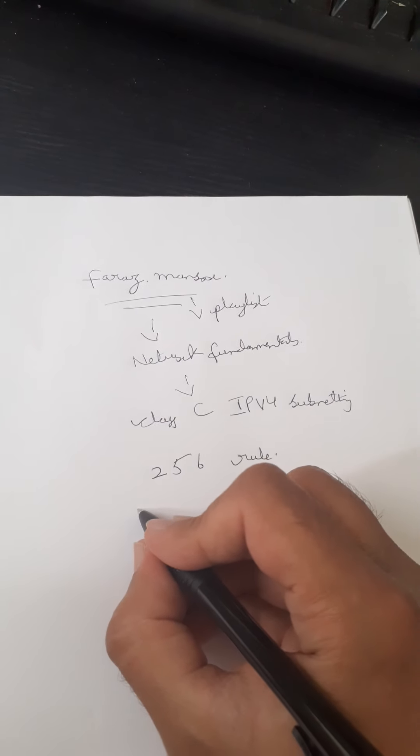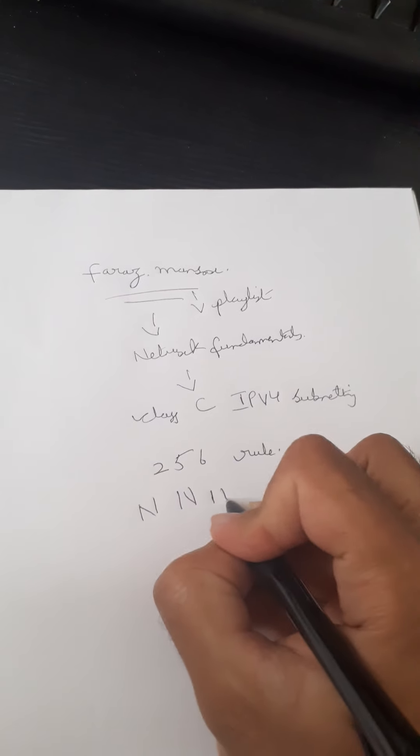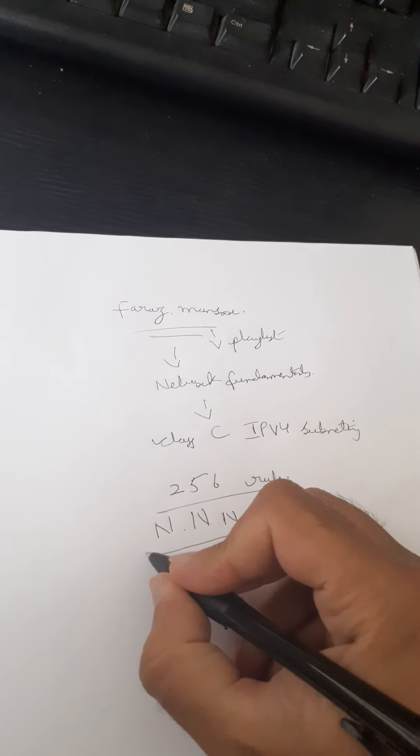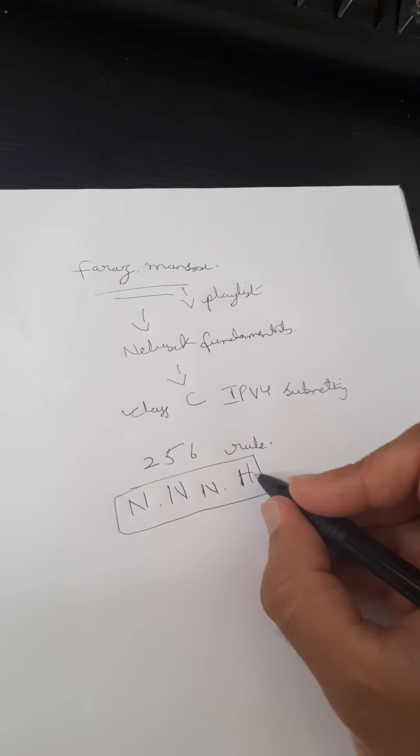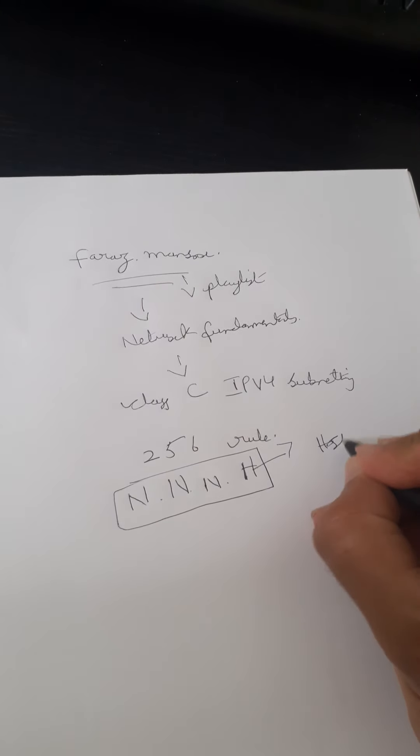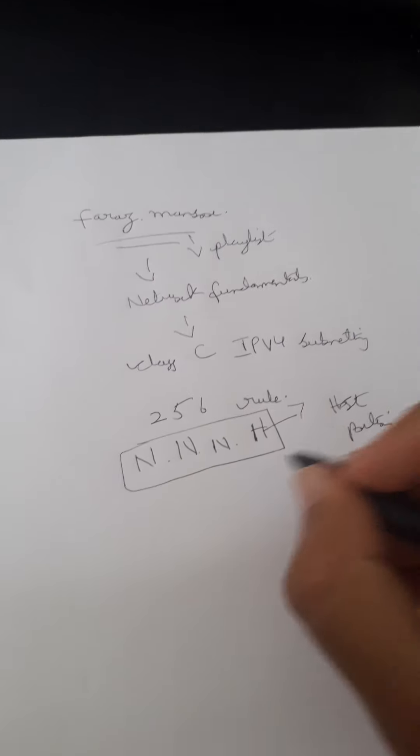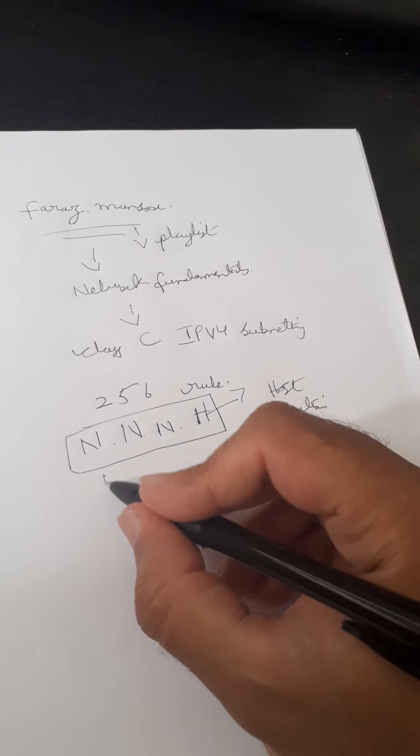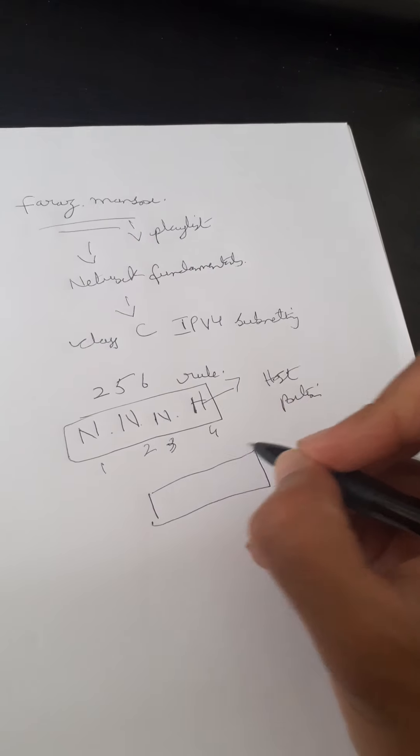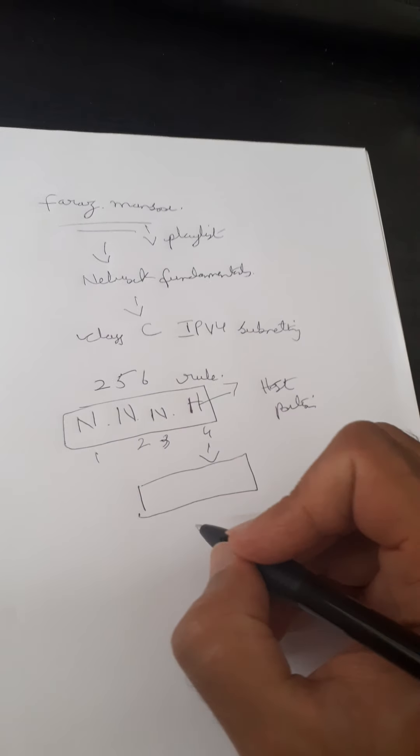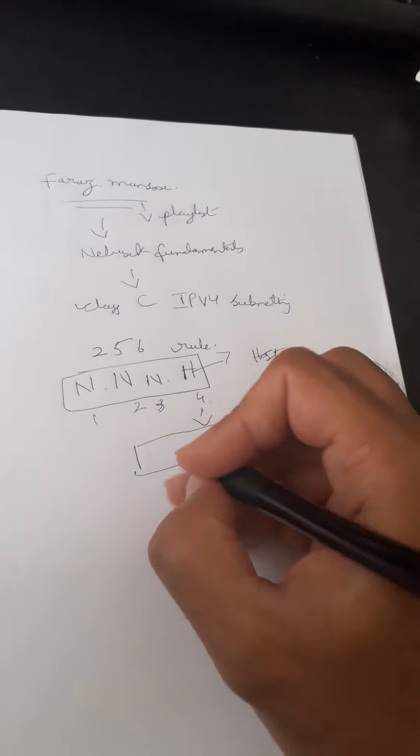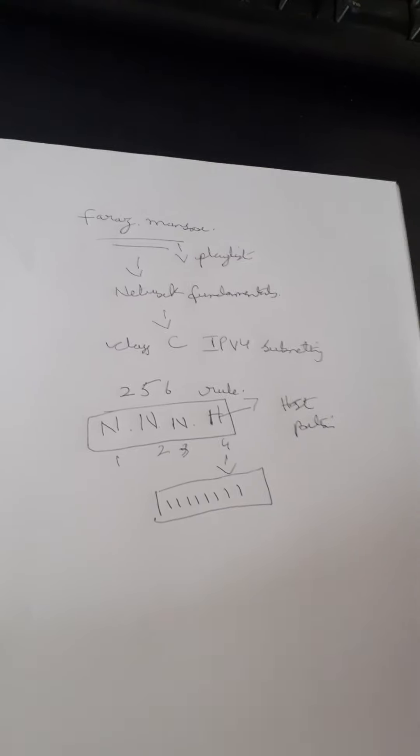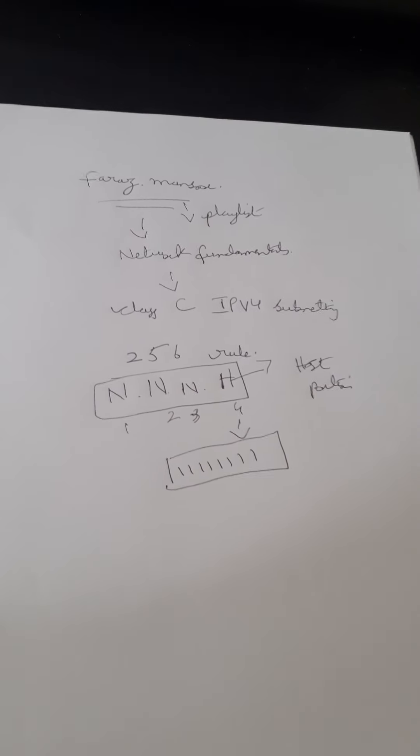slightly different from the concept in the last video, which was the 256 rule. As you know, network network network host, that was your Class C subnet mask. Here we are only interested in the host portion. Now if I break it forward, we are working in the fourth octet. So we are working in it. As you know, we go eight bits in one byte, so one two three four five six seven eight.